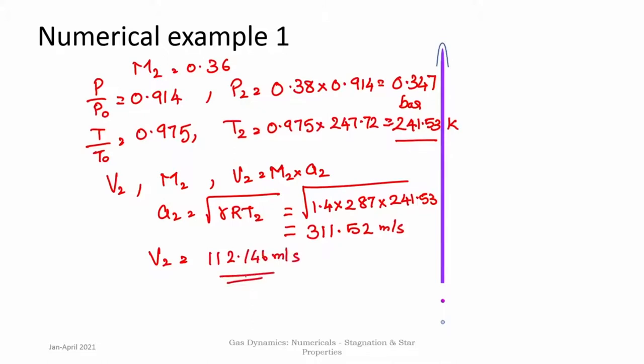This example showed how the concepts of stagnation pressure and stagnation temperature can be used to quickly estimate flow properties at different points in the flow path — in this case through an isentropic diffuser.